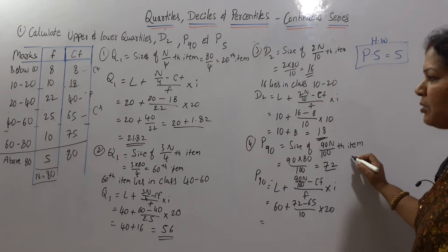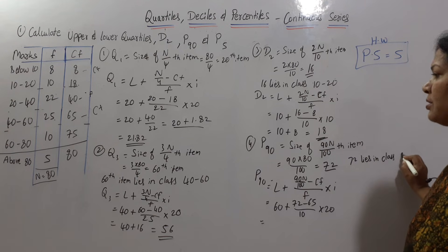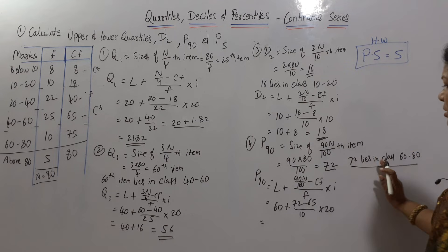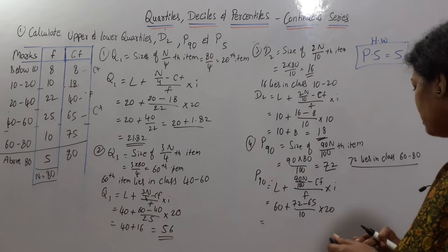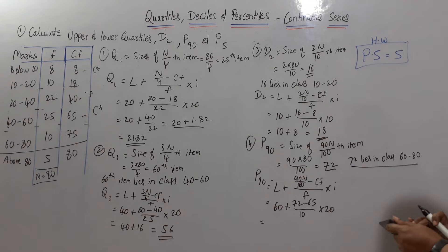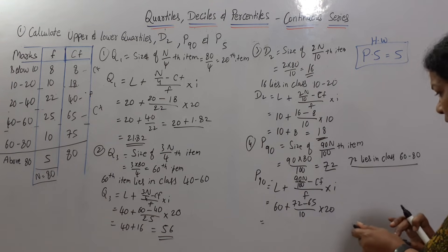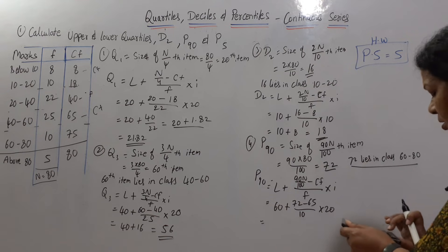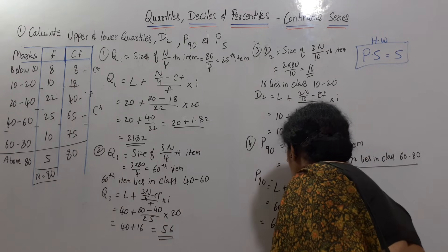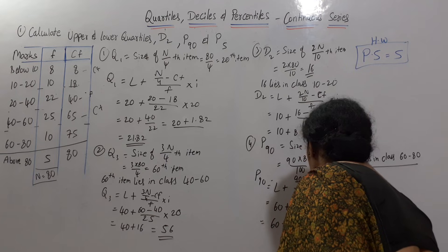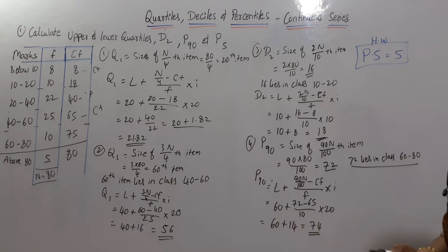72 lies in class interval 60 to 80. Applying the formula: 60 plus (72 minus 65) by 10 into 20. 72 minus 65 is 7. 7 into 20 is 140, divided by 10 is 14. So 60 plus 14 equals 74. P90 is 74.